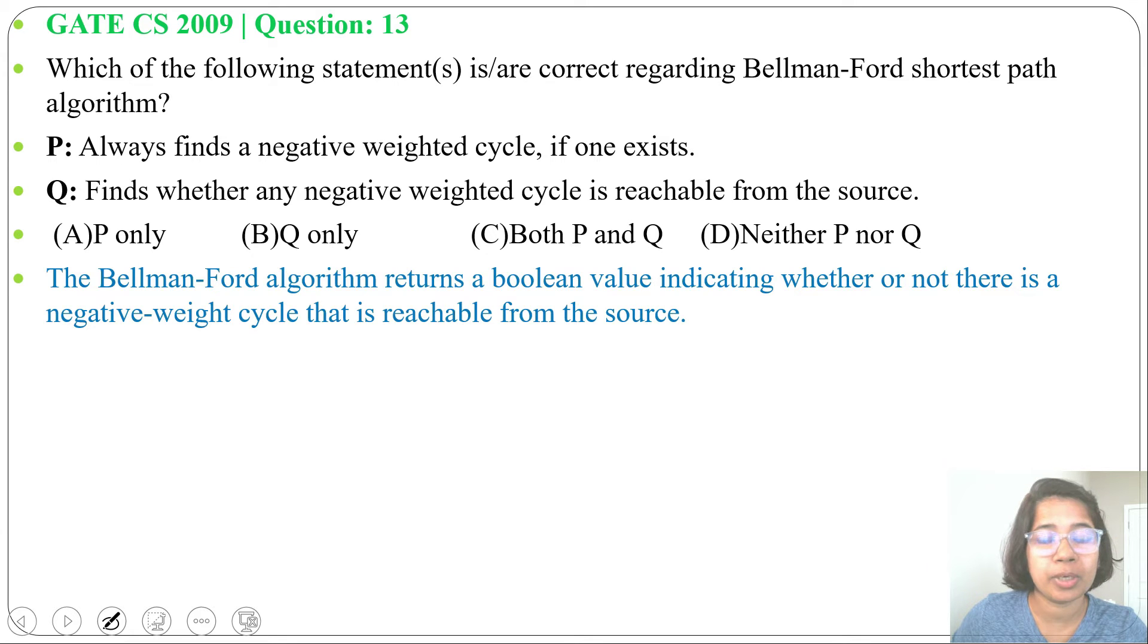The Bellman-Ford algorithm returns a boolean value, true or false, indicating whether or not there is a negative weighted cycle that is reachable from source. If it is reachable from source, then only it can find it. If it is not reachable from source, then it cannot find it.